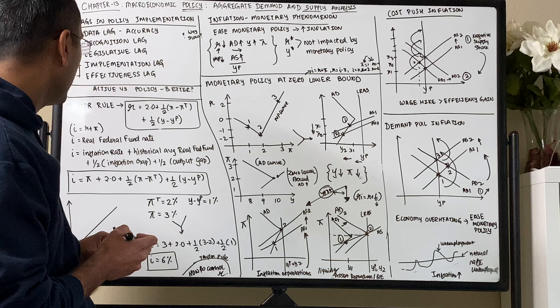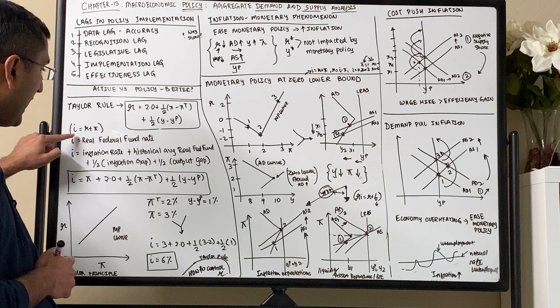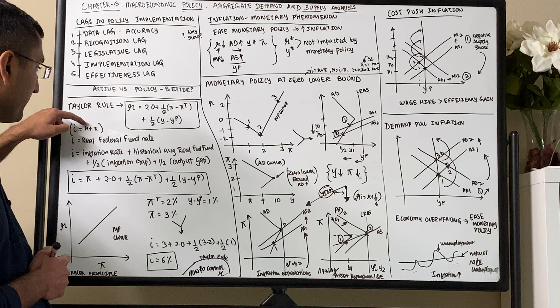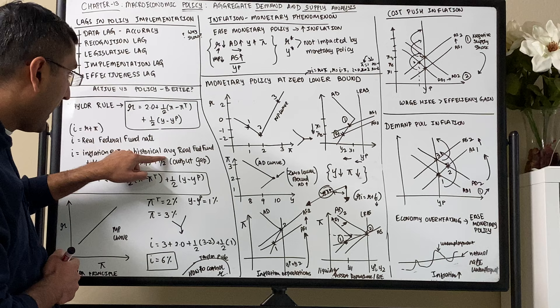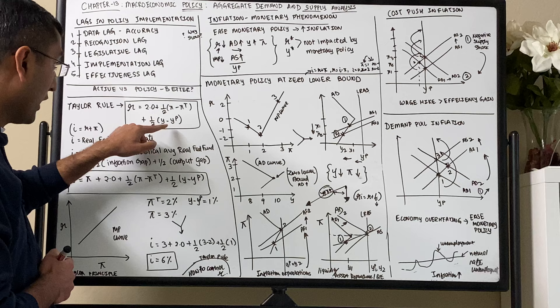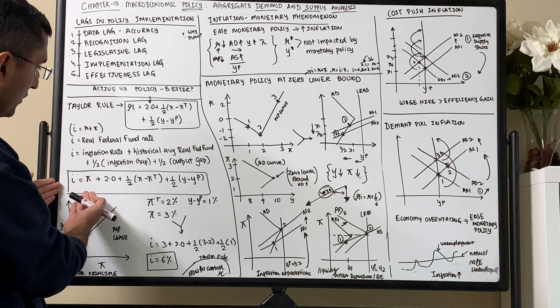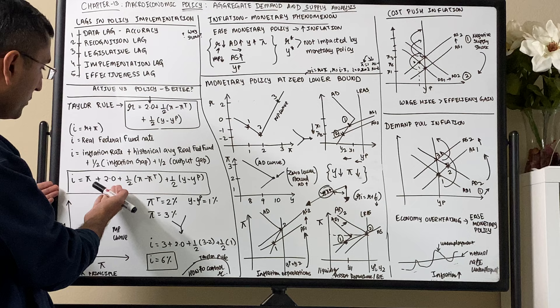We also know I equals R plus pi. So if we substitute R in this equation, I is basically the real Federal Fund rate — this is what the Federal Reserve controls. They control I, and that influences R, which is the real interest rate. So I equals inflation rate plus the historical average real fund rate plus half of the inflation gap plus half of the output gap.